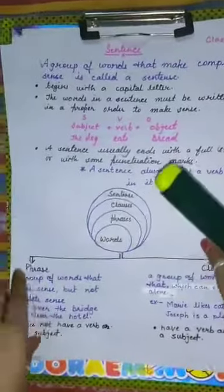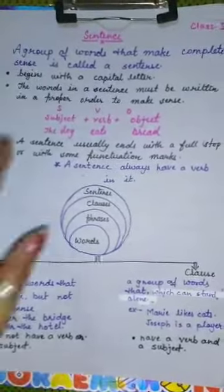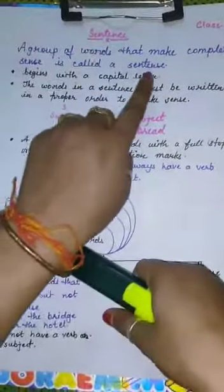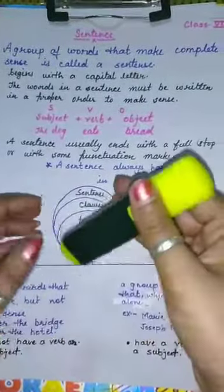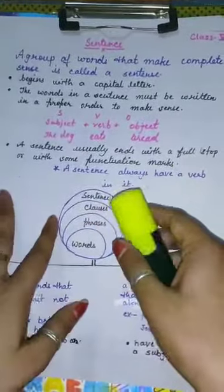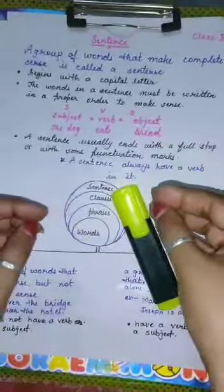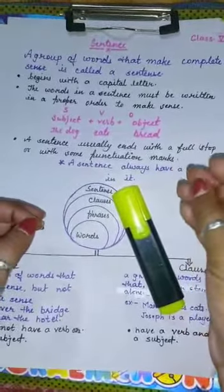A group of words that make complete sense is called a sentence. You usually listen to so many sentences, like a simple sentence, if I say, I have a cute doll.